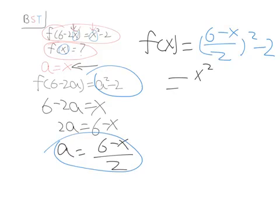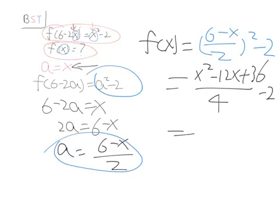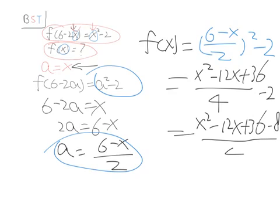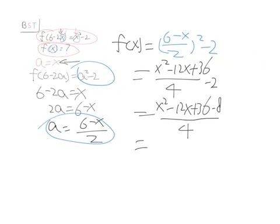So, the numerator equals x squared minus 12x plus 36 divided by 2 squared 4 minus 2. That further simplifies to x squared minus 12x plus 36 minus... Here is a 2. So, 2 equals 8 over 4. So, minus 8 divided by 4.